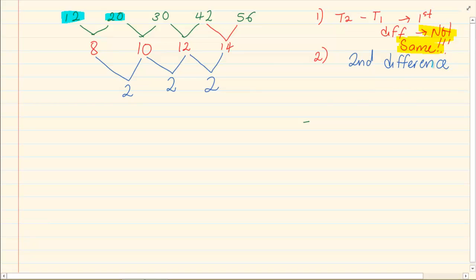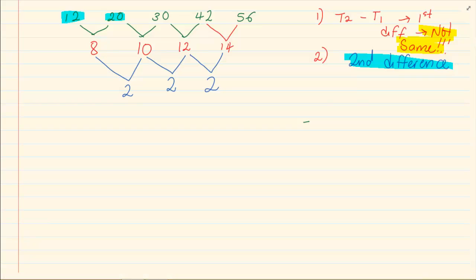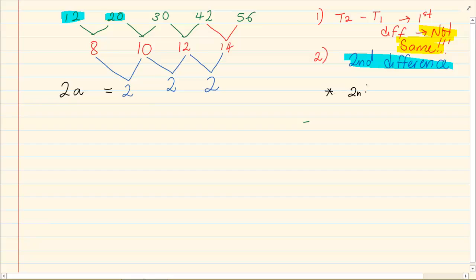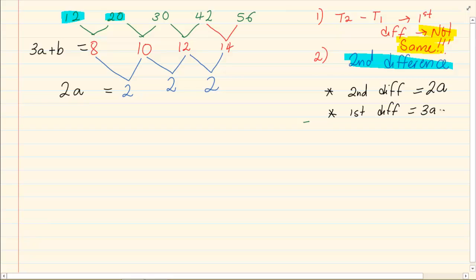The second difference is what we learn in grade 11. To get the formula: the second difference equals 2a, the first difference equals 3a plus b, and the first term — remember 12 is our first term — equals a plus b plus c.